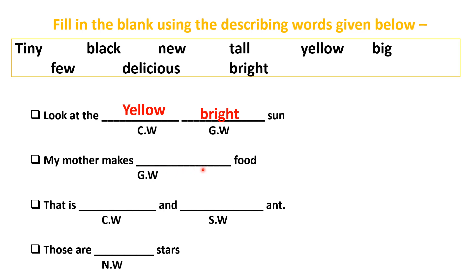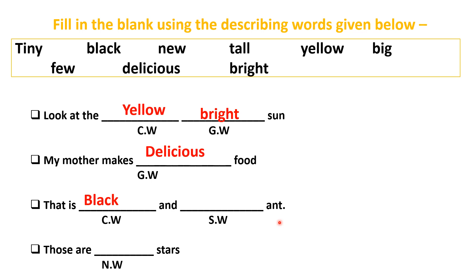Second sentence: 'My mother makes dash food.' Here we use a general word — 'My mother makes delicious food.' Third sentence: 'That is a dash and dash ant.' An ant is black in color, so 'black' is the color word. The size of an ant is tiny, so 'tiny' is the size word: 'That is a black and tiny ant.'